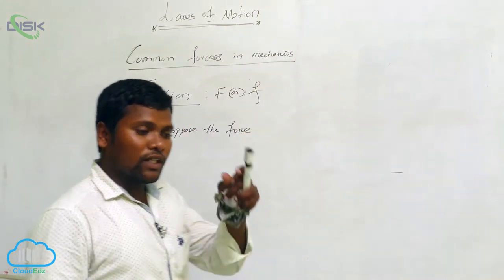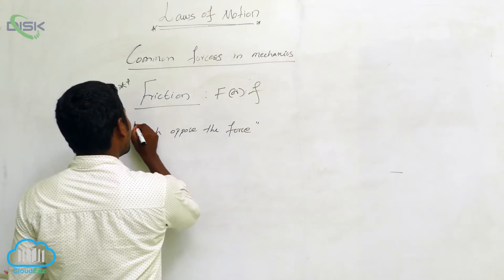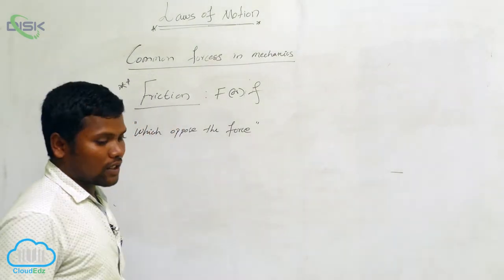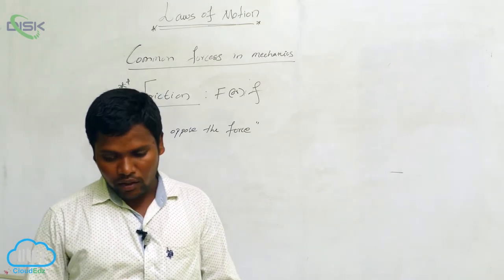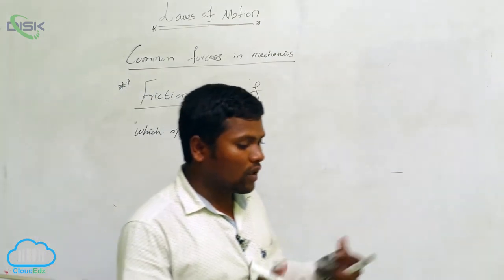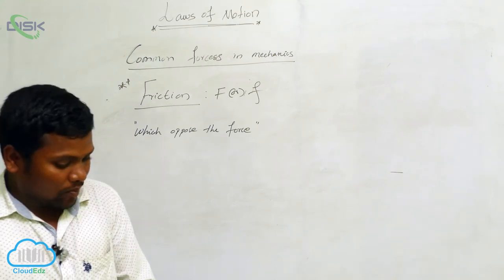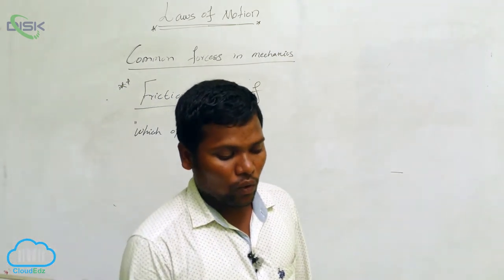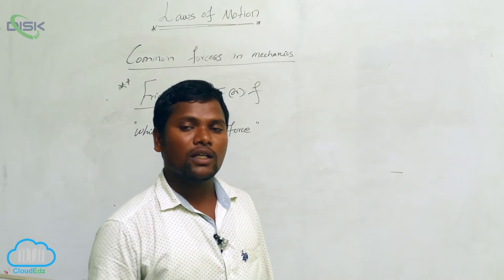When you apply a force and after some time the object stops, that is due to friction. For example, a child is playing with a ball and it falls to the ground. The ball moves from one place to another because it has velocity and mass, but after some distance it stops. Something opposite to the motion is acting — that is the frictional force.